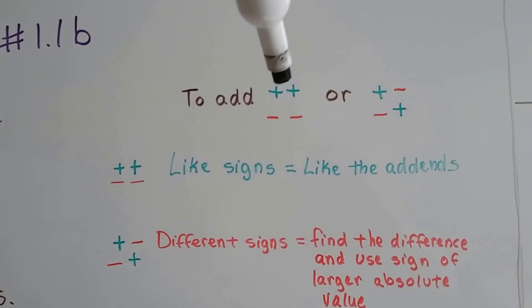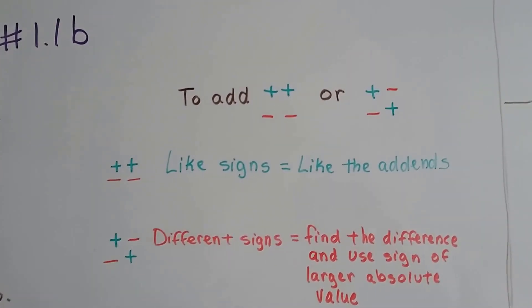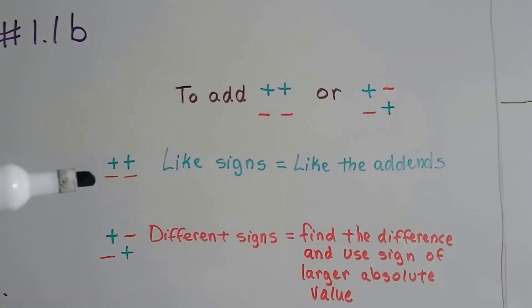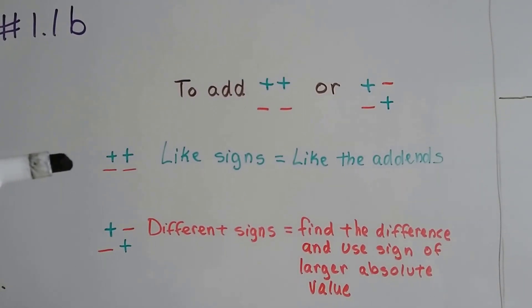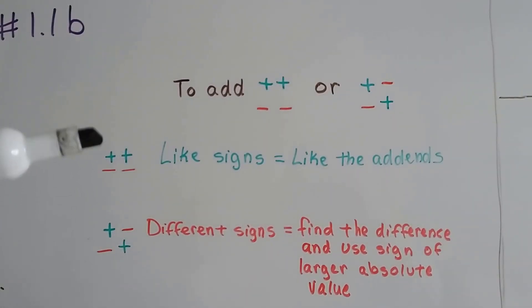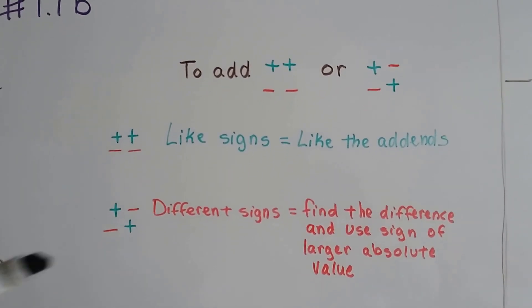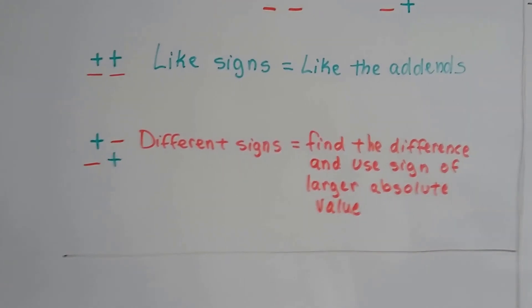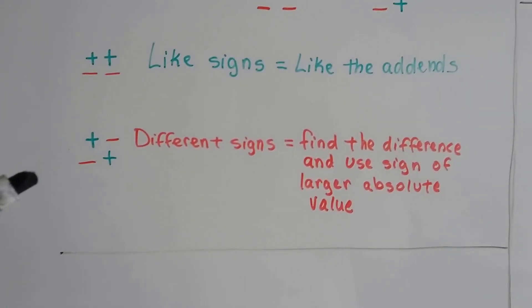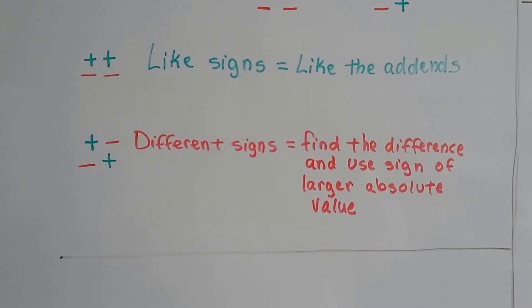To add a positive to a positive or a negative to a negative, when we have like signs, we just use the same sign as the addends. If they're both positive, the answer is positive. If they're both negative, the answer is negative. It's the different signs that causes the problem — that's where everyone gets confused. You find the difference between the two numbers and you use the sign of the larger absolute value, the one that's farther from zero.